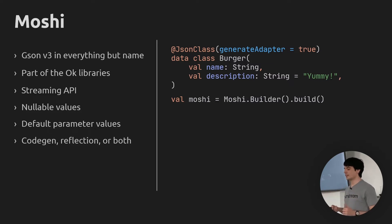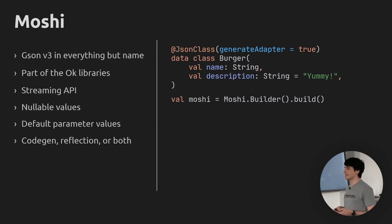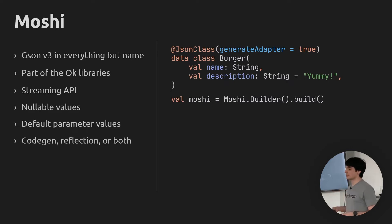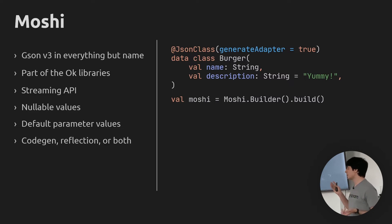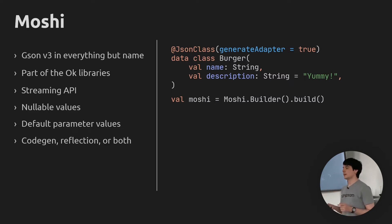I won't show the Gradle configuration here — I've given a longer talk about Moshi last year, which will be in the references at the end. The model object uses the CodeGen setup, that's why I have the @JsonClass annotation with generateAdapter set to true. This will, at compile time, create an adapter implementation that the default Moshi builder will pick up and use automatically.